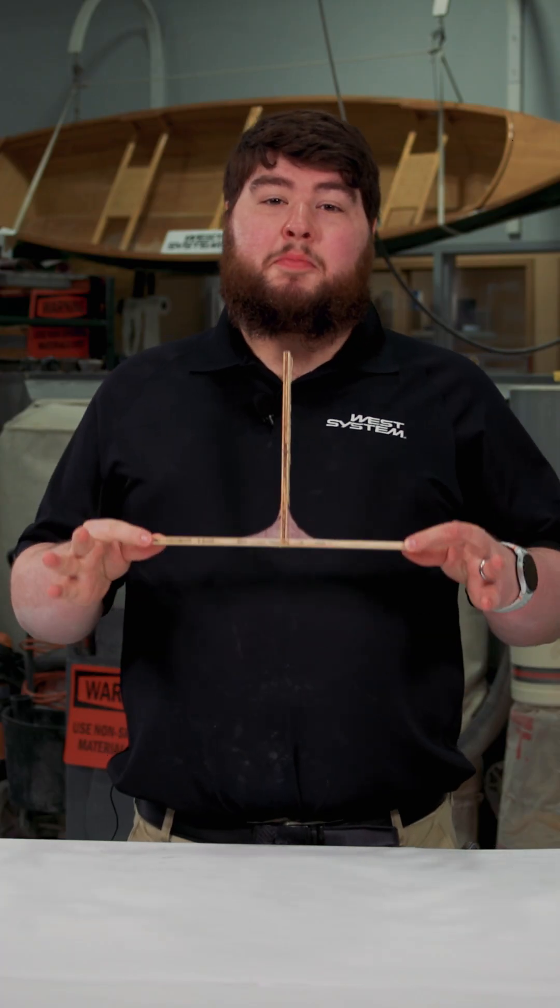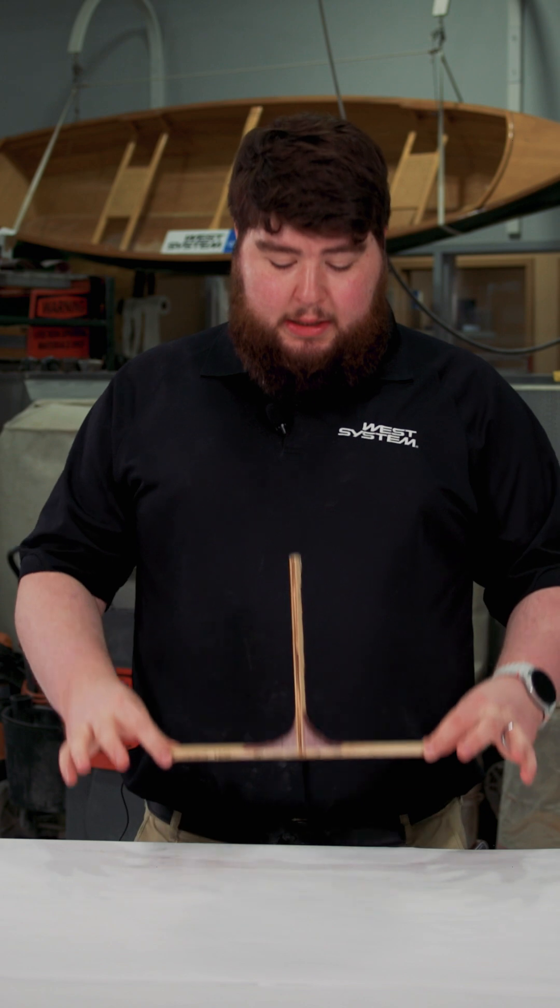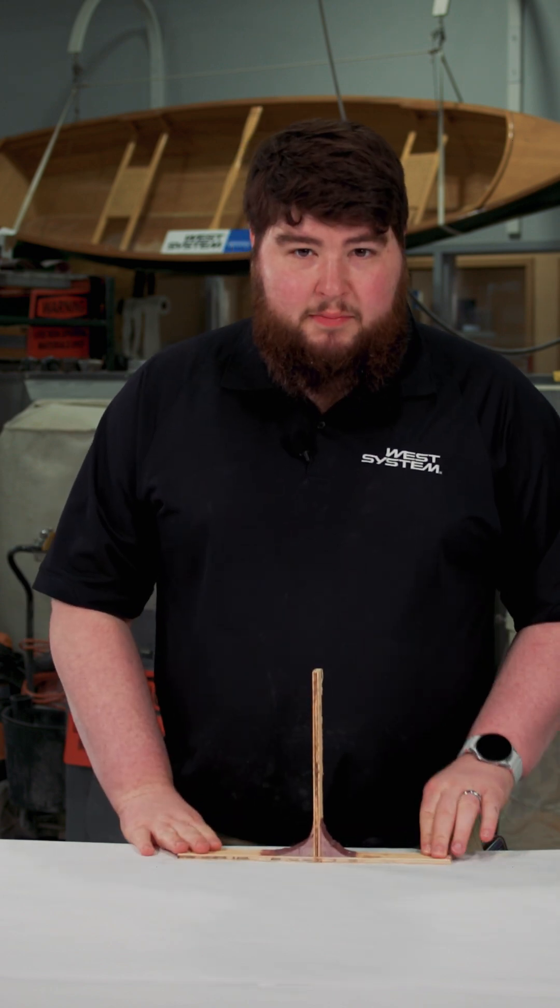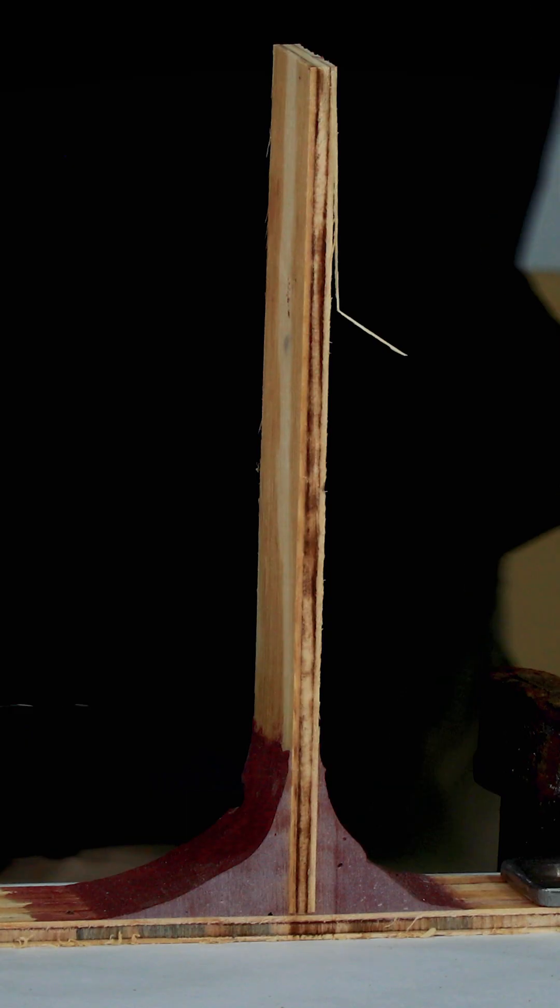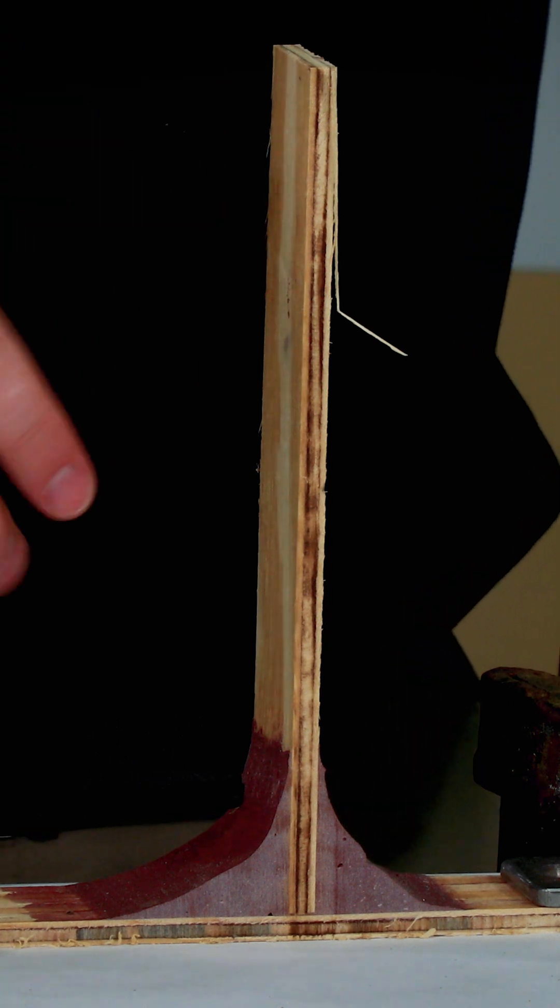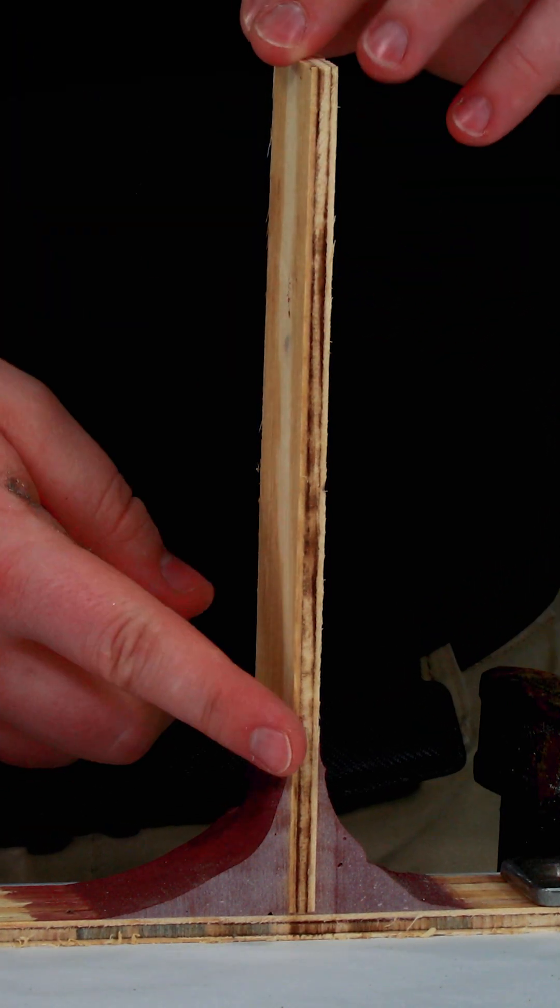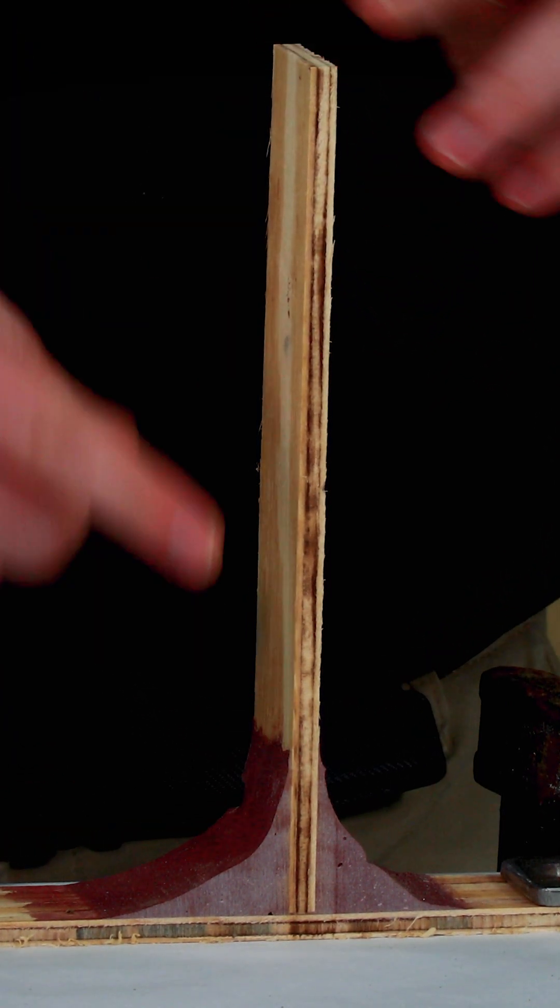To demonstrate this, we're going to take our appropriately sized fillet and then clamp it down to the table, and I'm going to pull on it. So I've clamped down this appropriately sized fillet onto the table, and so we expect to see a failure right above the fillet.